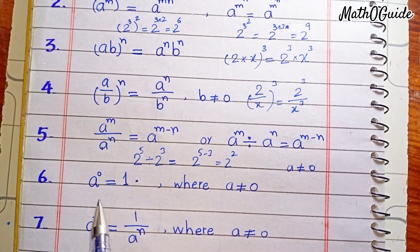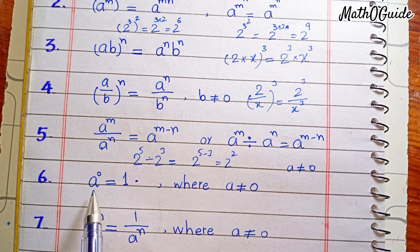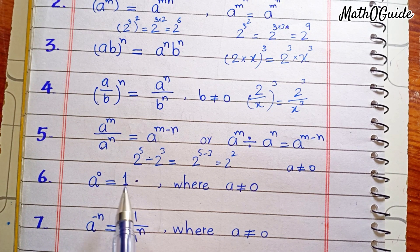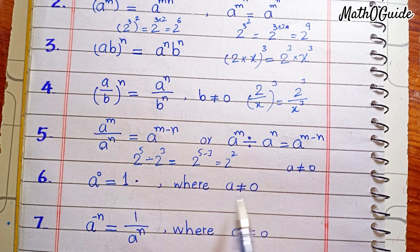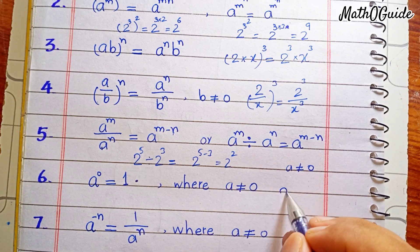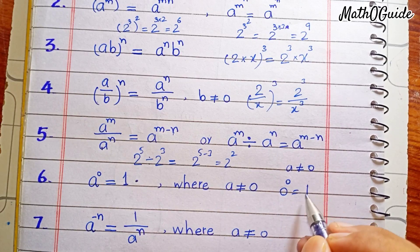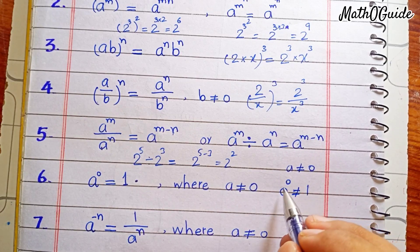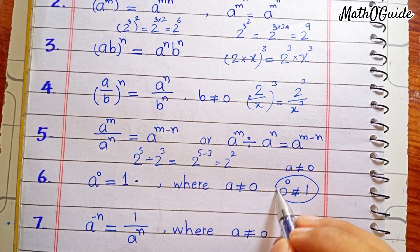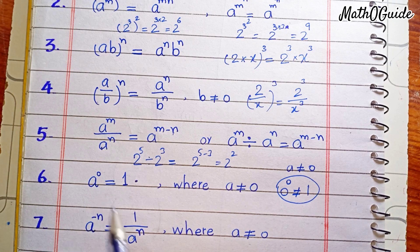Next is the zero power rule: any base raised to power 0 is equal to 1, where a is not equal to 0. We cannot write that 0 raised to power 0 equals 1 — that is not correct — but for all other bases this rule applies.